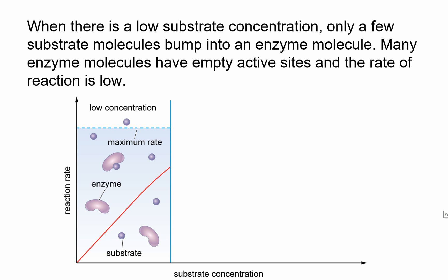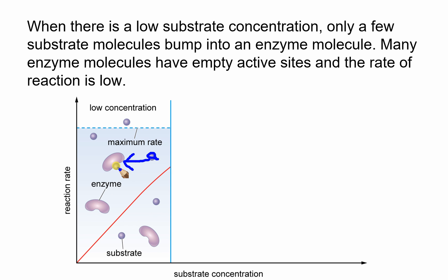Now I'm going to explain why the rate of reaction is slower at the start. The reason is that there's a low substrate concentration — in other words, there are only a few substrate molecules that can bump into the enzyme. The chances of that happening are lower, so many of these enzymes have an empty active site; there's just not enough substrate to enter the active site.